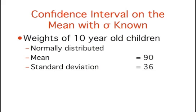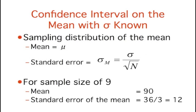Assume that the weights of 10-year-old children are normally distributed with a mean of 90 and a standard deviation of 36. What is the sampling distribution of the mean for a sample size of 9? The mean of the sampling distribution of the mean is the population mean, mu. The standard deviation of the sampling distribution of the mean is the standard deviation of the population divided by the square root of the sample size. This standard deviation is called the standard error of the mean. We use sigma to refer to the population standard deviation, sigma sub m to refer to the standard error of the mean, and n to refer to the sample size.